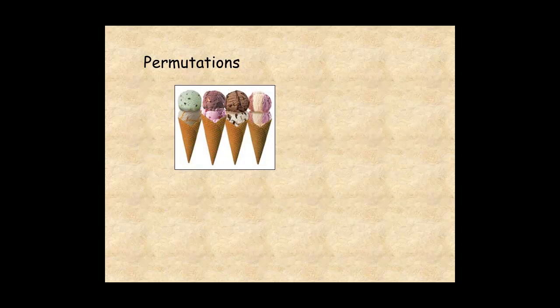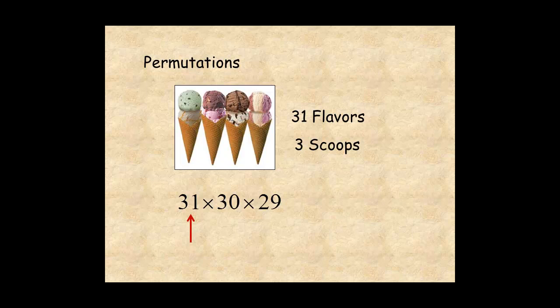For another example, an ice cream shop has 31 different flavors. If you want to buy a three scoop cone, there are 31 choices for the first scoop, 30 for the second, and 29 for the third, which gives a total of 26,970 permutations.